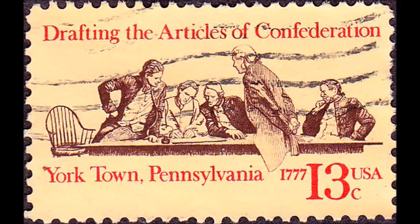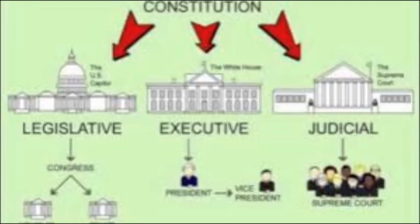The state governments are structured exactly like they are today. If you look at the state constitutions drafted in 1776 and 1777, they look like the government we operate under nationally today. There are typically three branches: an executive branch where a governor enforces the law, a legislative branch or lawmaking body — like Virginia's House of Burgesses — and a judicial branch, a state-level court that ensures laws are fair and people are abiding by them. Some states even drafted a bill of rights — a list of freedoms belonging to the people that cannot be taken away by the state government.